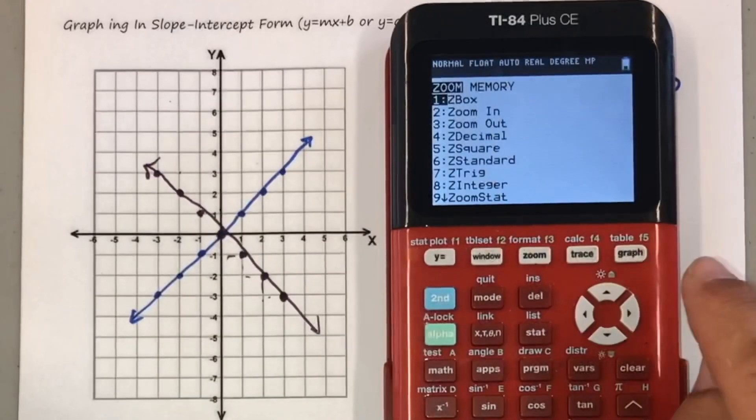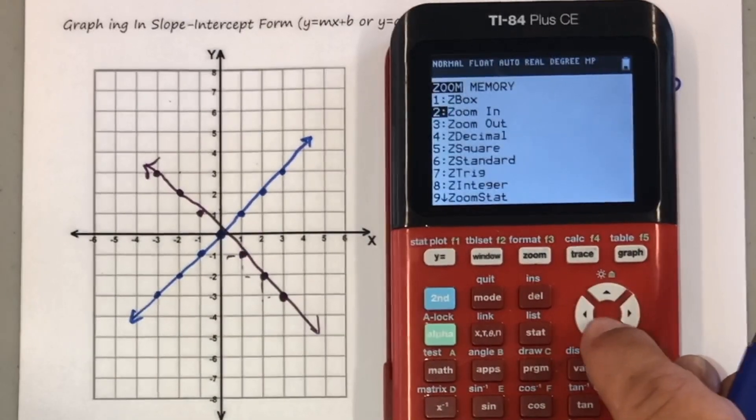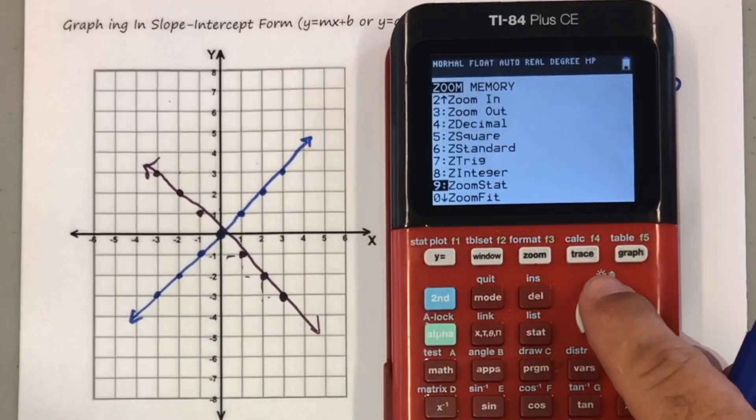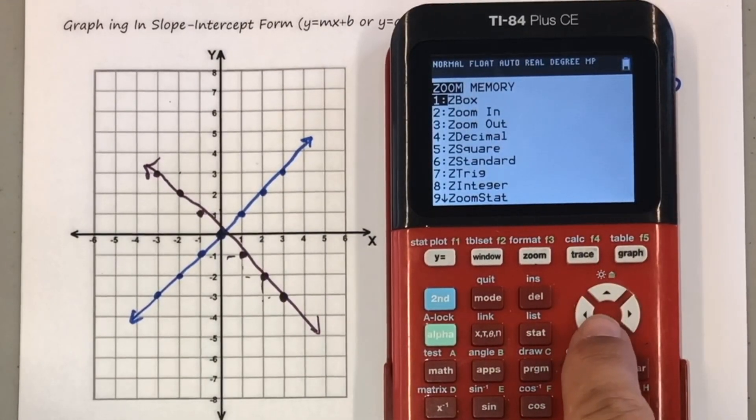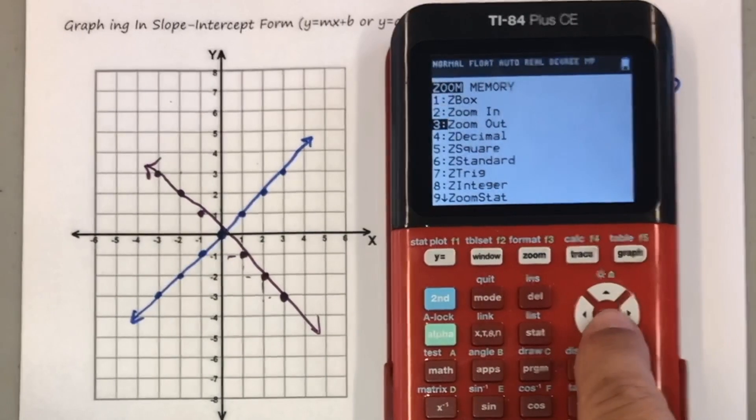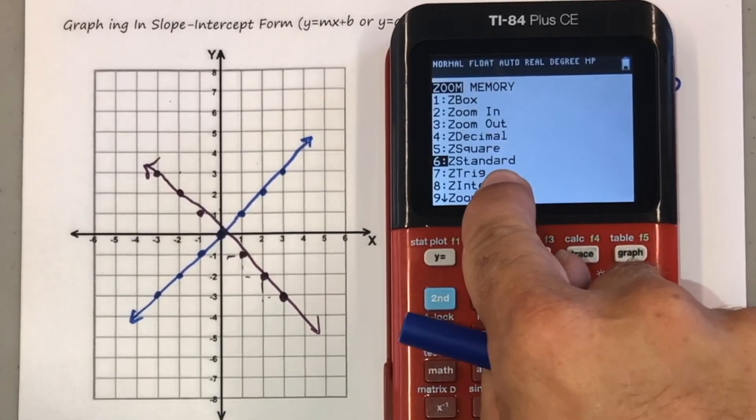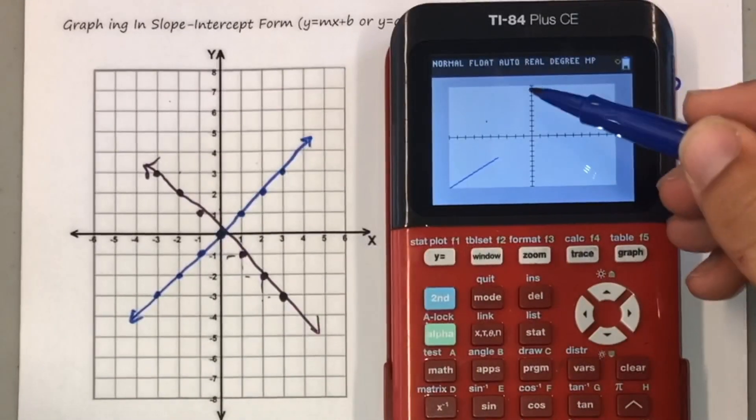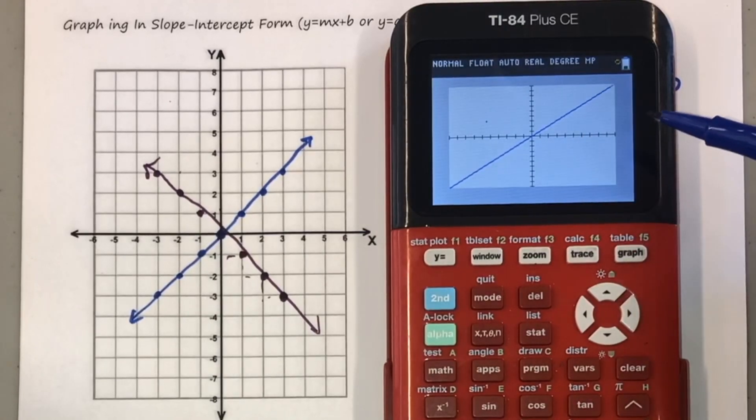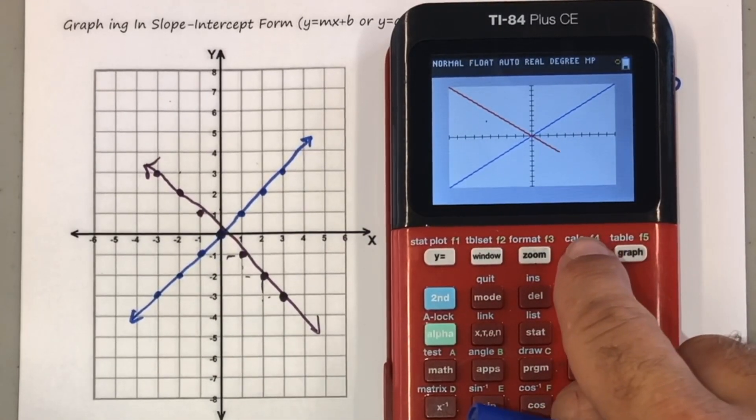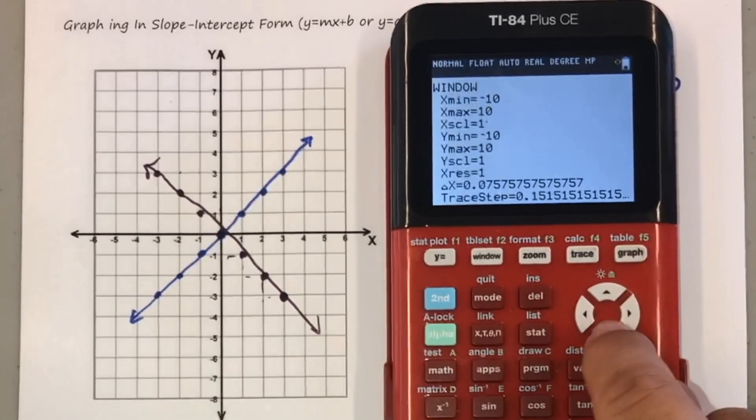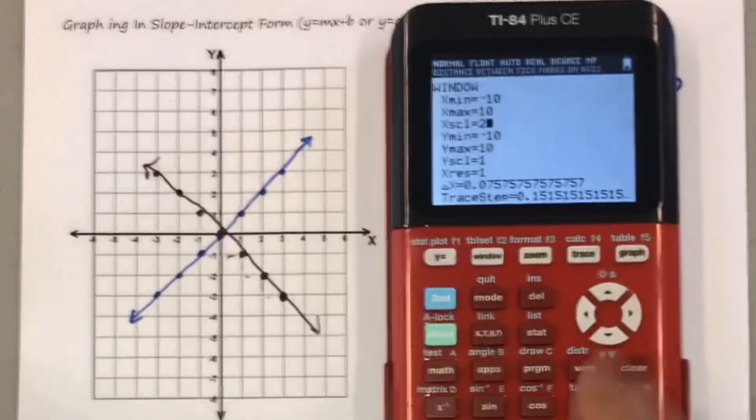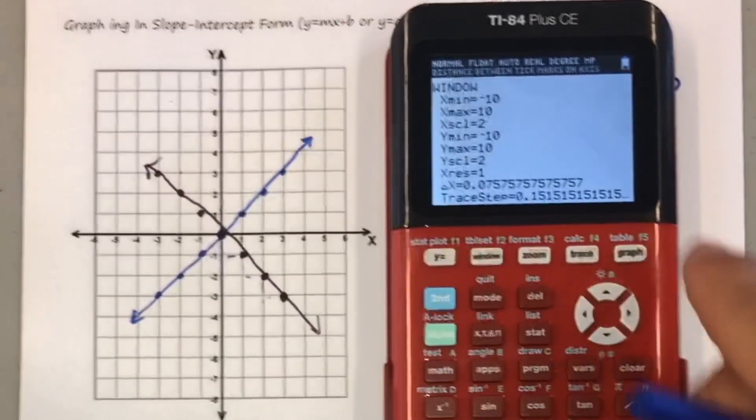Now another way to do that is, let's say I had my graph was off. If I go to z standard and hit that, that'll also make my graph go back to negative 10 and 10. So let's say I had in my window the x scale at two and the y scale at two. So if you see each of these, that's two, four, six, eight, 10, two, four, six, eight, 10.